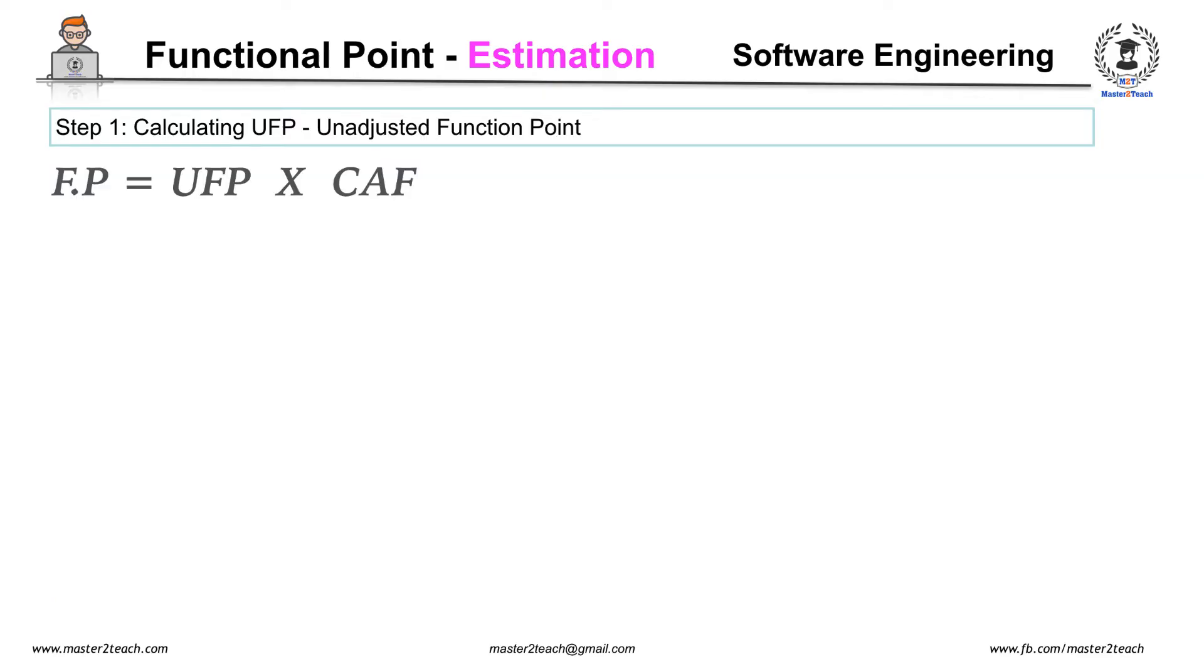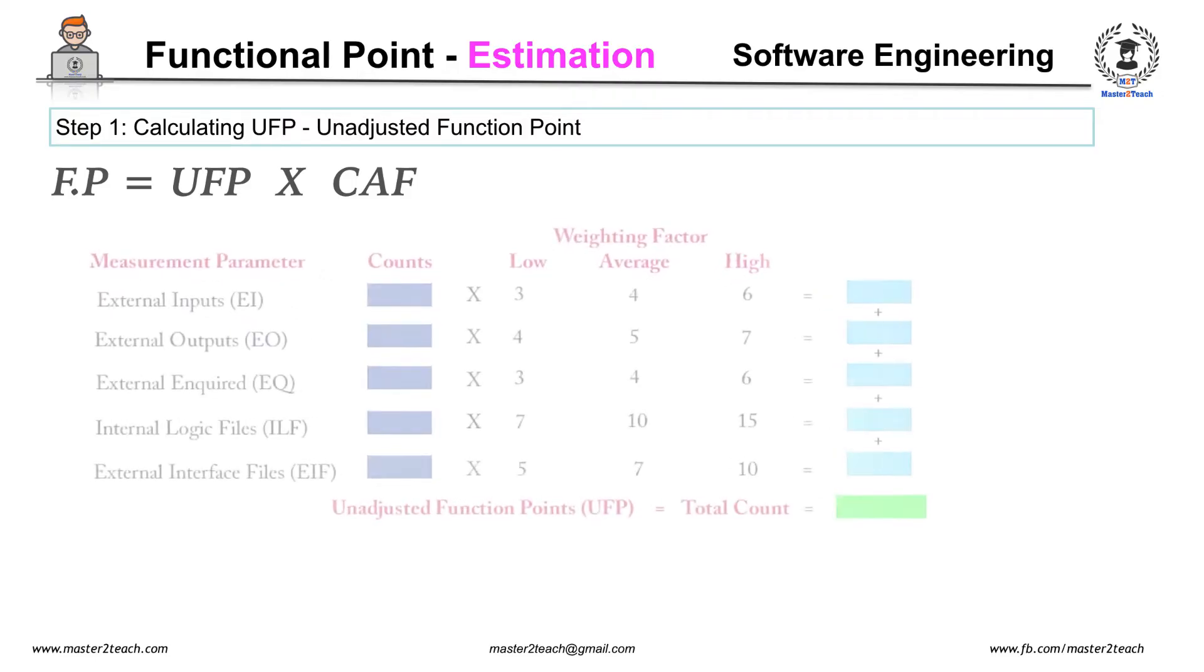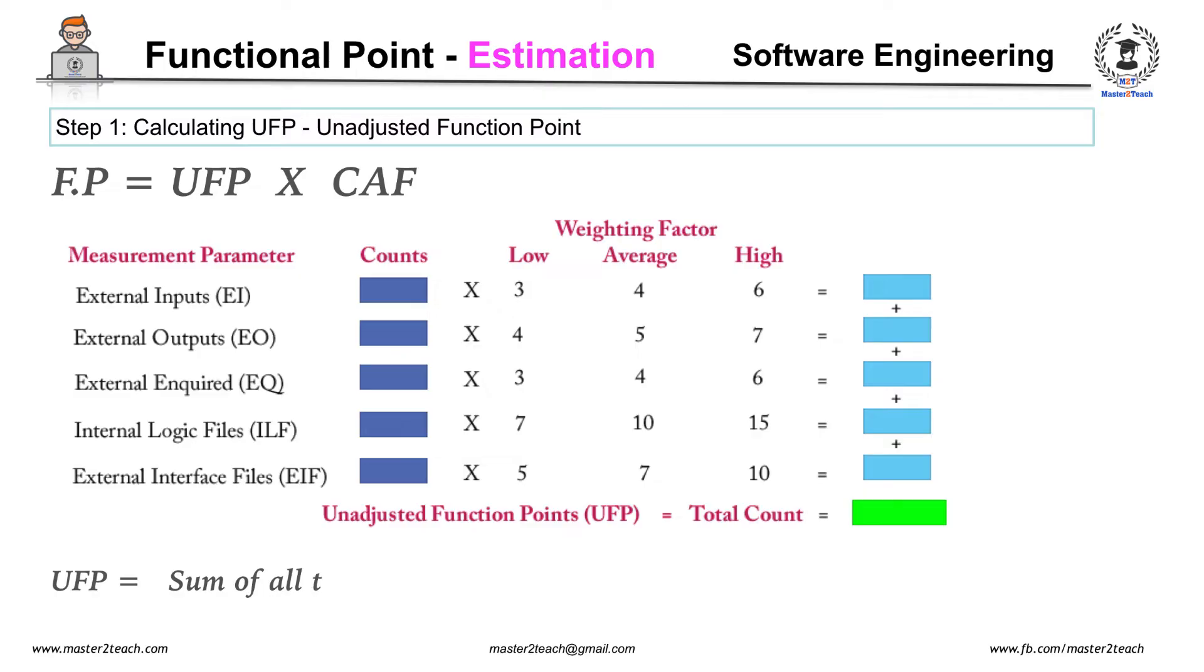Unadjusted Functional Point is equal to sum of all the complexity of the External Inputs, External Outputs, External Inquiries, Internal Logic Files, and External Interface Files.